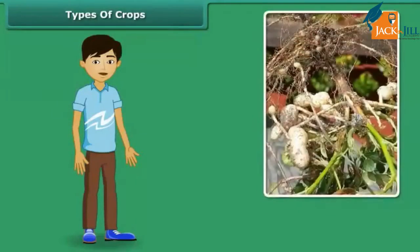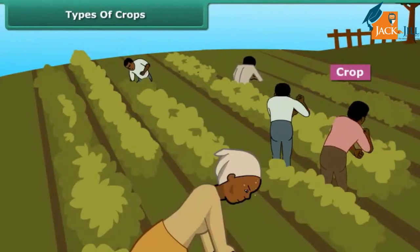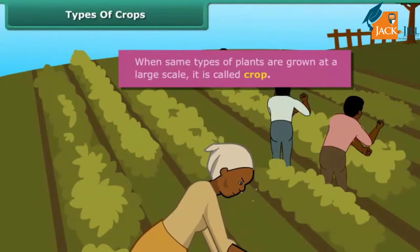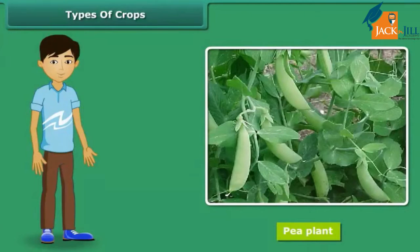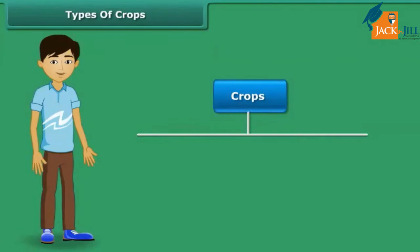Have you ever looked at a groundnut plant? Can we call it a crop? No, we cannot. When the same types of plants are grown at a large scale, then it is called a crop. If you wish to grow a pea plant in the hot season, you can't do it. In India, crops are broadly classified into two categories on the basis of the season they are grown in — Rabi crops and Kharif crops.